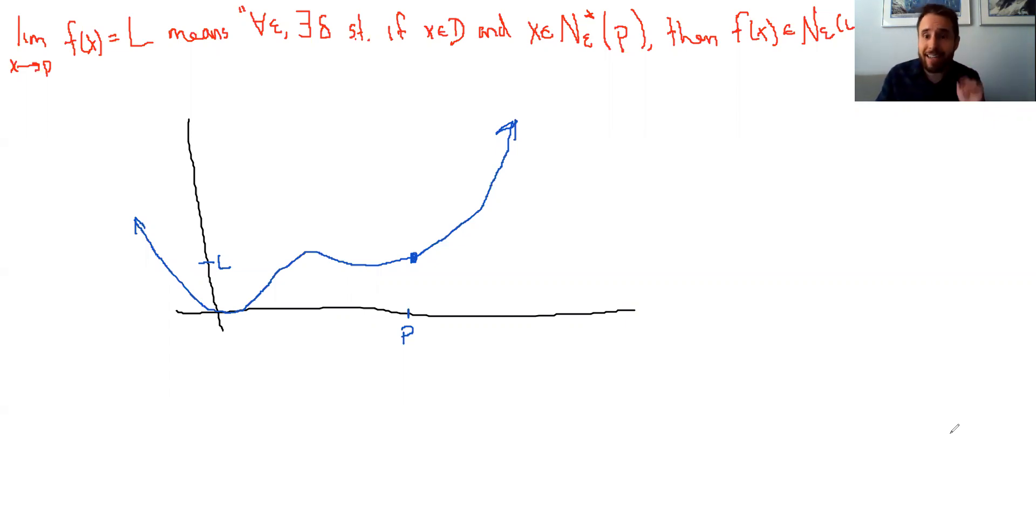What we mean by that technically is the following sort of challenging definition in which for all epsilon, there exists a delta such that if we take an x value that is in the domain D and within the deleted delta neighborhood of P, then f of x will be within the deleted epsilon neighborhood of L.